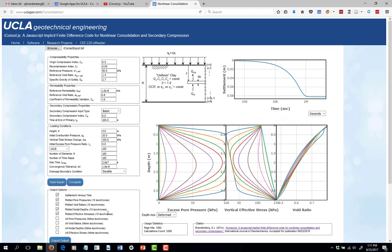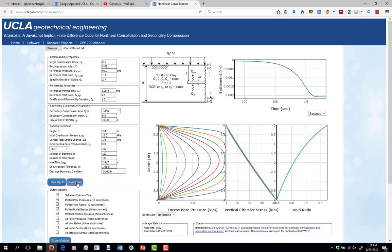So if you have a problem that doesn't involve significant settlement, you end up with something that really is a lot like Terzaghi's 1D theory. If I were to make the change in stress even smaller, it would look pretty much symmetric. I bet these lines fall right on top of Terzaghi's theory. You can see very little change in effective stress, very little change in void ratio. What that means is that the permeability and compressibility are basically staying the same, and Terzaghi's theory is a good approximation of this problem.